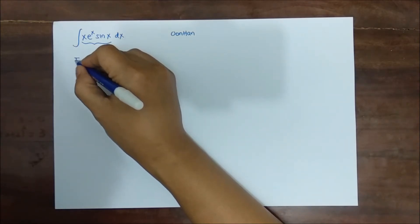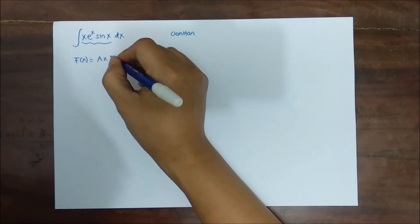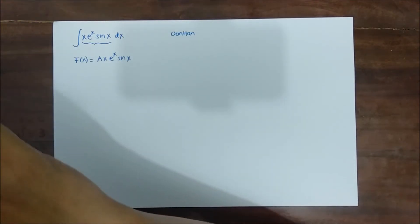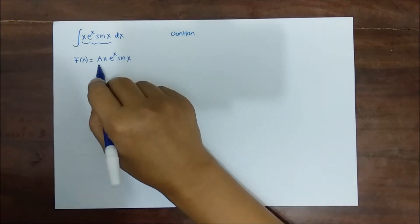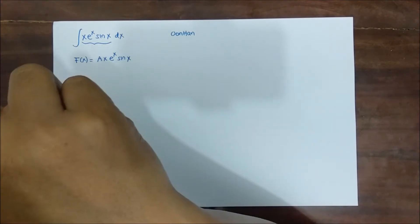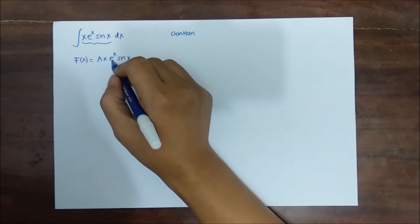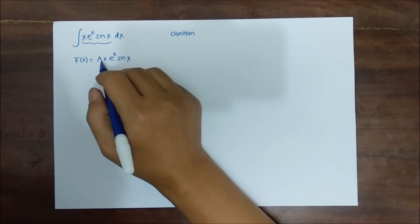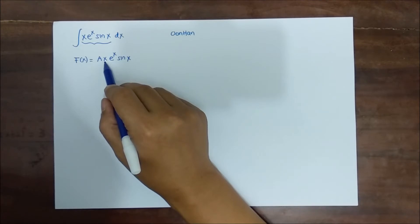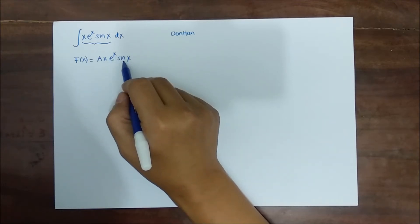First we look for something of the form a·x·e^x·sin(x). By the Leibniz rule, when we take the derivative of a product of two functions we use the product rule, and for a product of three functions we just take the derivative of each one in turn, keeping the others the same.